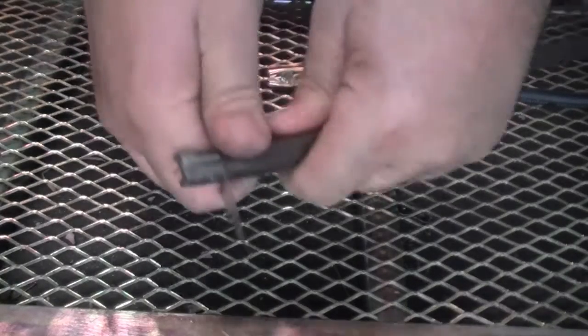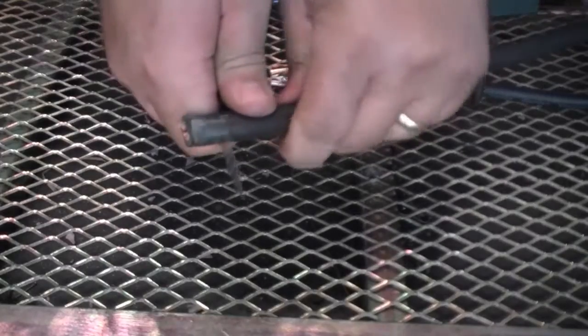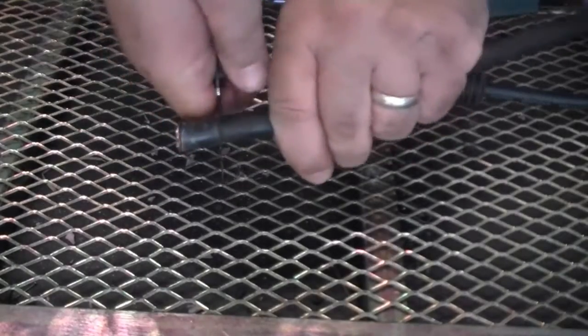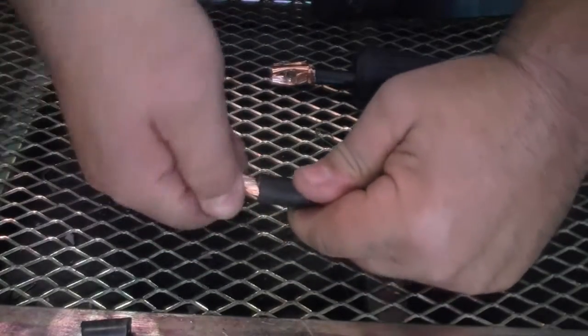Trim away the insulation only to the depth the cable will be inserted. Be careful not to cut into the copper itself. Be sure to twist any stray copper wires back into the braiding.